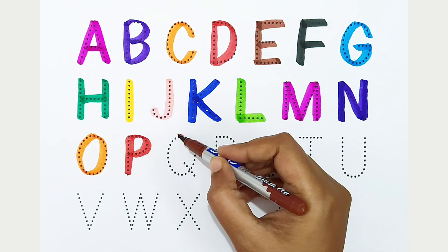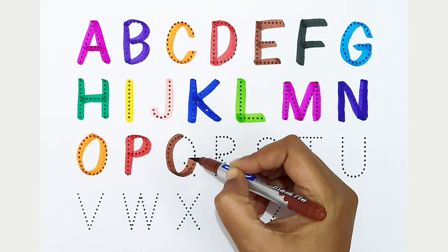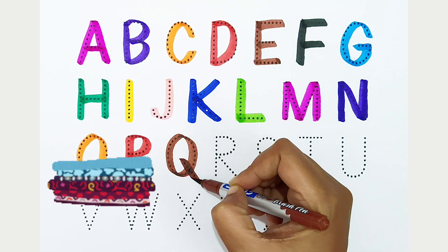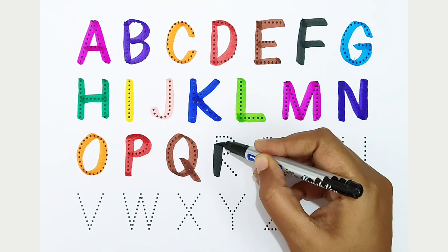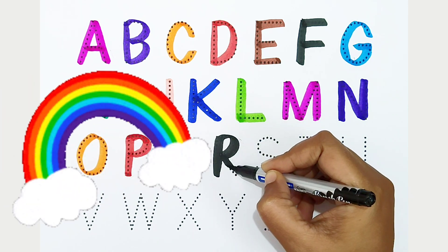Q - brown color. Q is for quilt. R - black color. R is for rainbow.